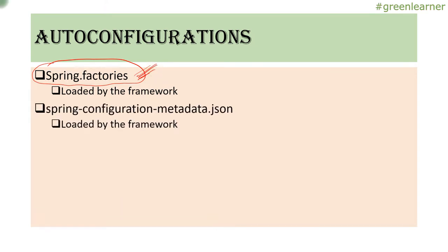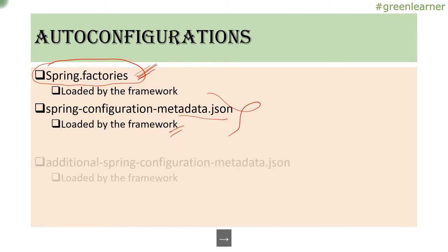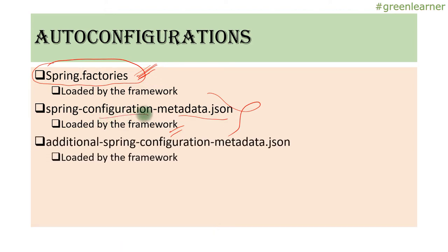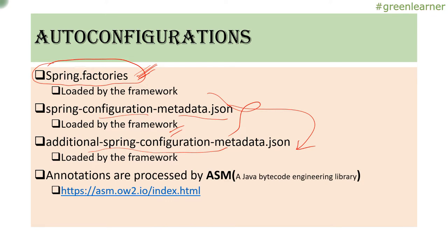And then spring-configuration-metadata.json. The properties you are adding in your application.properties and application.yml are also loaded by the application framework, and this needs to be provided into the starter. Apart from this, they have additional spring configuration metadata which is related to this. And next, the annotations that are there with the library are processed by ASM, which is the Java bytecode engineering library.